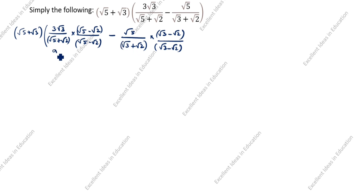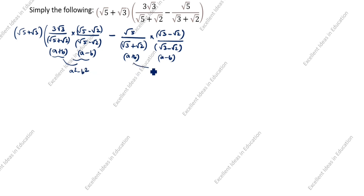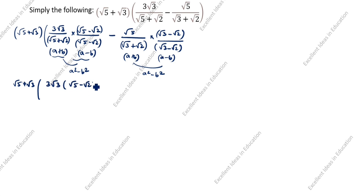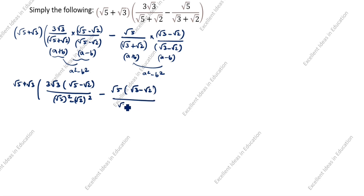You see the denominator: this is a plus b, here is a minus b — that is the (a+b)(a-b) formula, which gives a squared minus b squared. Here a is root 5 and b is root 2. So we write root 5 plus root 3, open the bracket, 3 root 3 times (root 5 minus root 2) divided by root 5 squared minus root 2 squared.